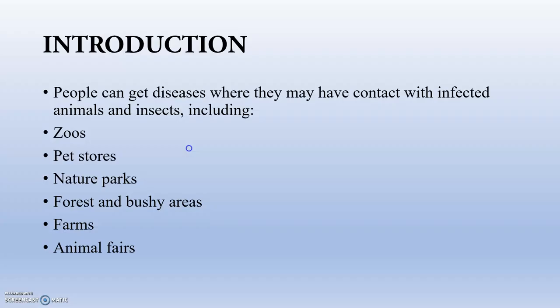People can get disease where they may have contact with infected animals and insects — from zoos, pet stores, nature parks, forage and butchery areas, farms, and animal fairs.